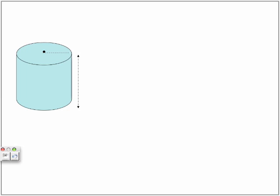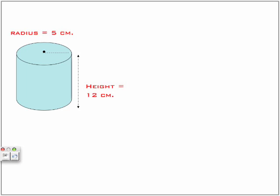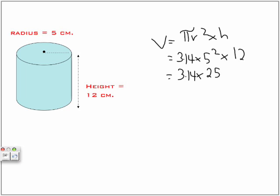Let's try an example. Height is 12 and radius is 5. The volume equals 3.14 times radius squared times height, which equals 3.14 times 25 times 12, which equals 942.